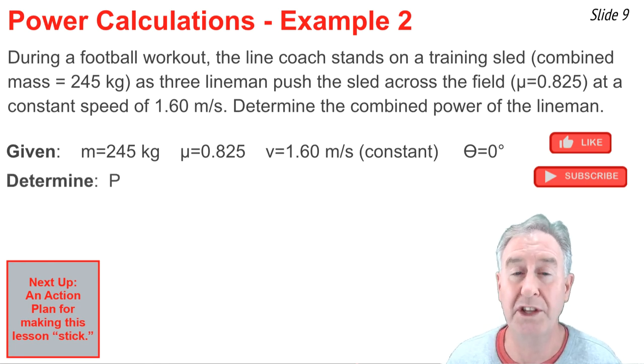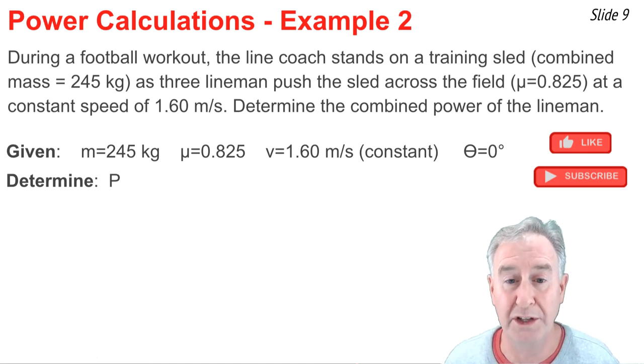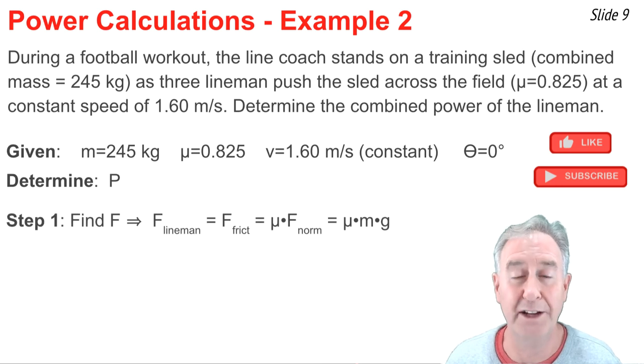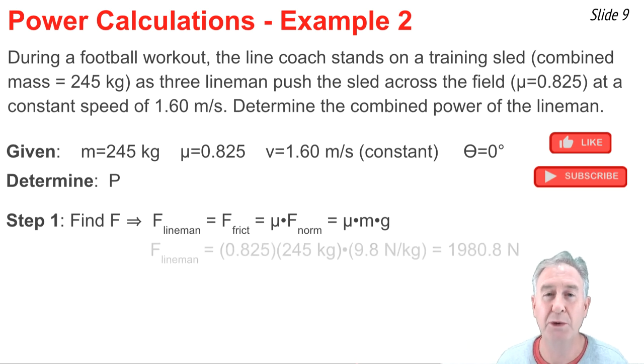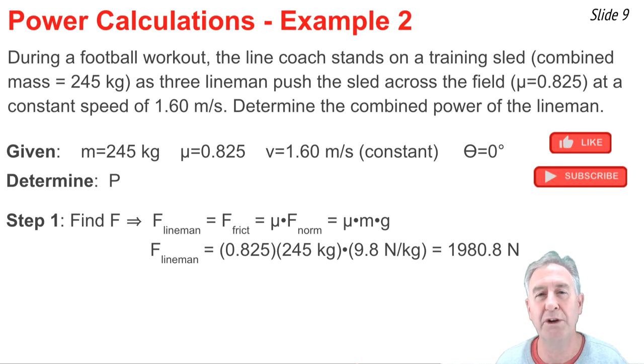So now, we can calculate the power. We'll begin by determining the force that the linemen apply to the training sled. That force would be equal to the force of friction, since we have a constant speed motion. So, the force of friction is always equal to mu times f norm. And on horizontal ground, that would be mu times the weight of the object, mu times mg. So, we can substitute 0.825 for mu, and 245 kilograms for the mass, and 9.8 newtons per kilogram for g, and we can solve for the force applied by the linemen. It's 1980.8 newtons.